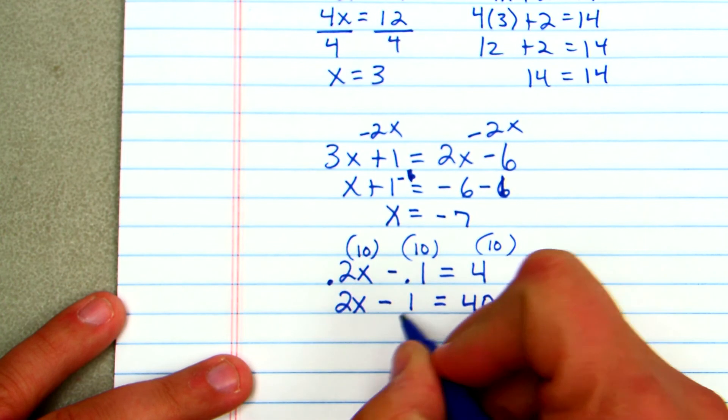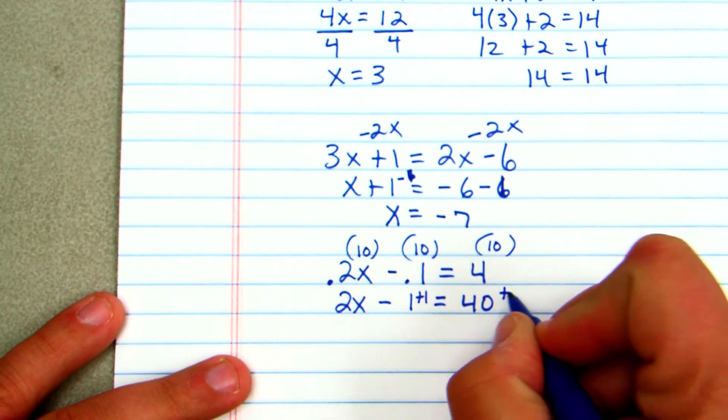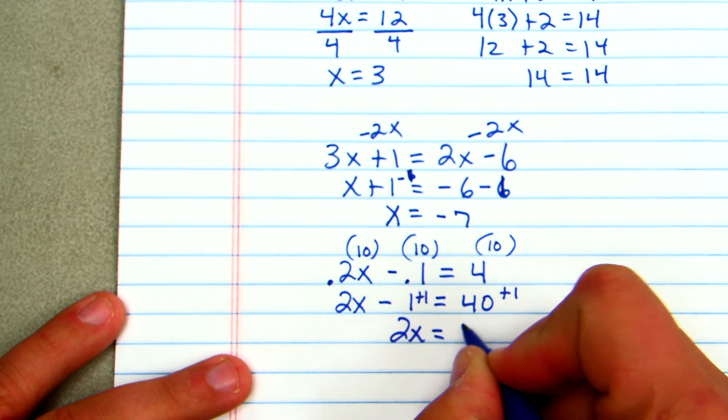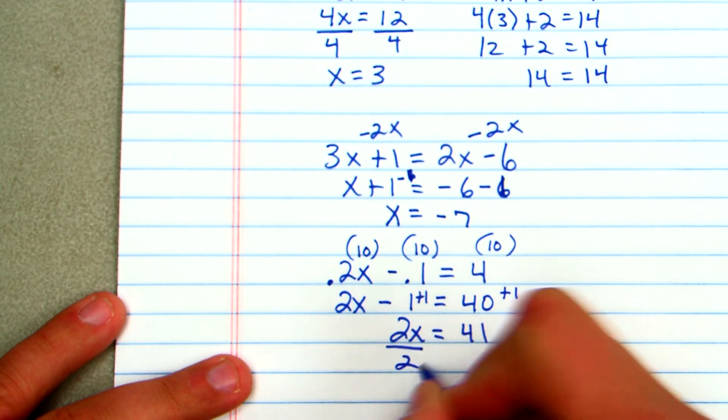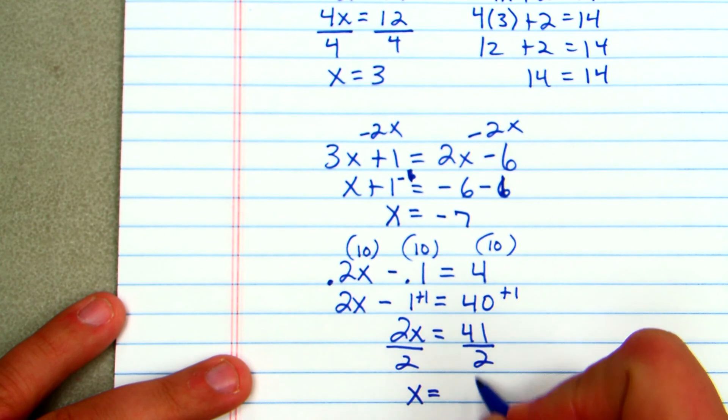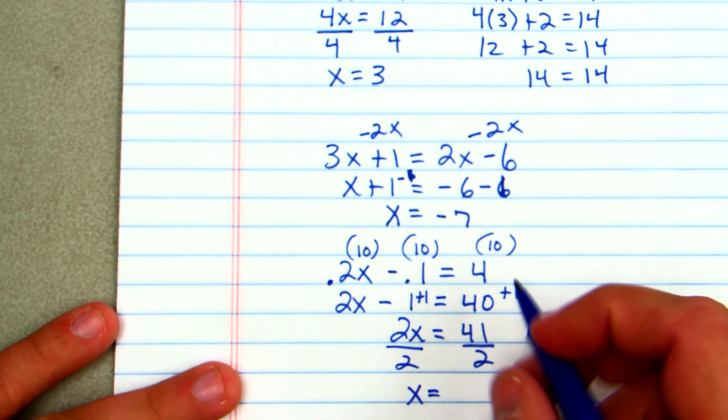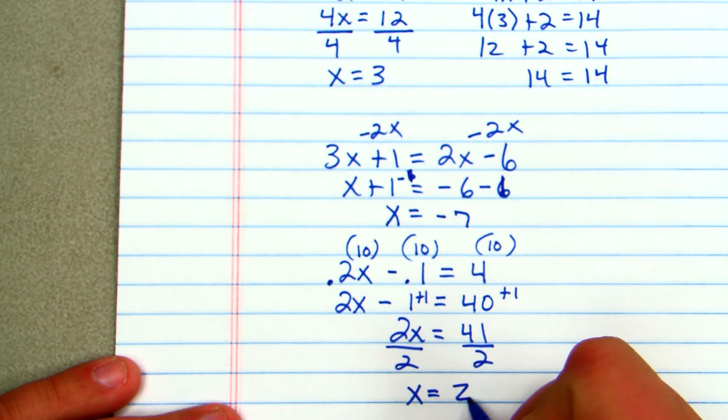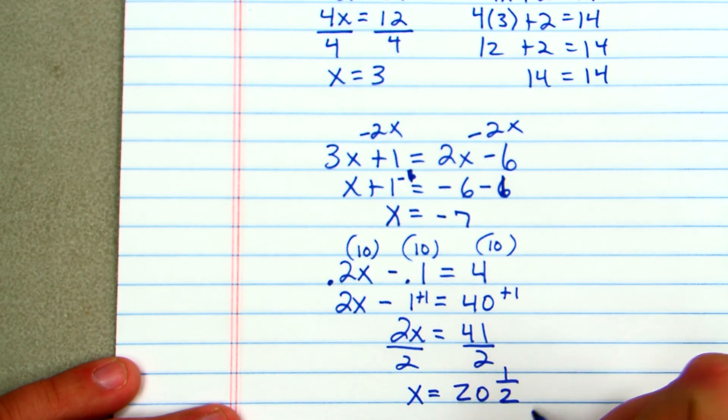Now I'll go through and add 1 to both sides. 2x is equal to 41. Divide both sides by 2. x is equal to 41 halves, which we can change into 20 and 1 half, or 20.5.